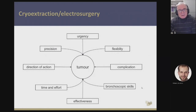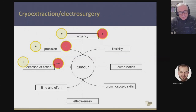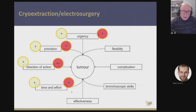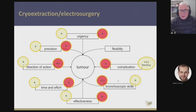If we add electrosurgery or electroablation to these techniques, we have an immediate effect and it's precise. There are not as many different directions of action, but we have different tools. The effort is a little bit higher than with cryo because we have to place the other electrode on the skin of the patient. It's effective, though placing a snare or blunt probe is a little more difficult, and you can have deeper effects if you use too much energy. However, we have better control over bleeding. It's not as flexible as a cryo probe.